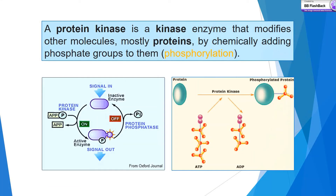Protein kinase is a kinase enzyme that modifies other molecules, mostly proteins, by chemically adding phosphate groups to them — that means phosphorylation. As you can see in the figure, the protein in the presence of protein kinase is phosphorylated, meaning an inactive protein becomes activated.